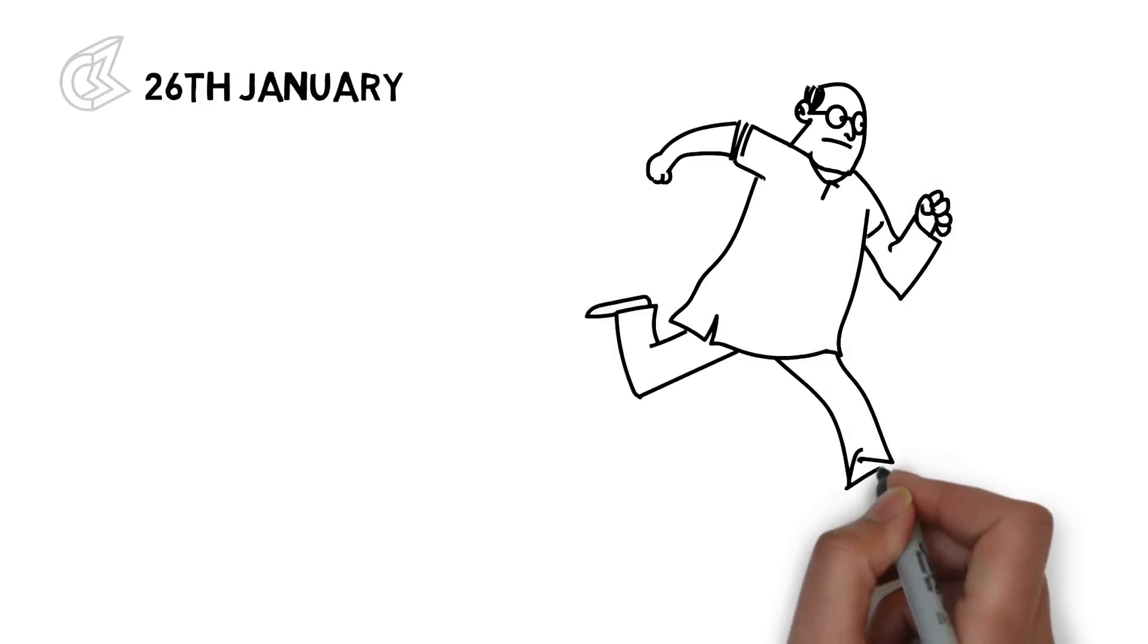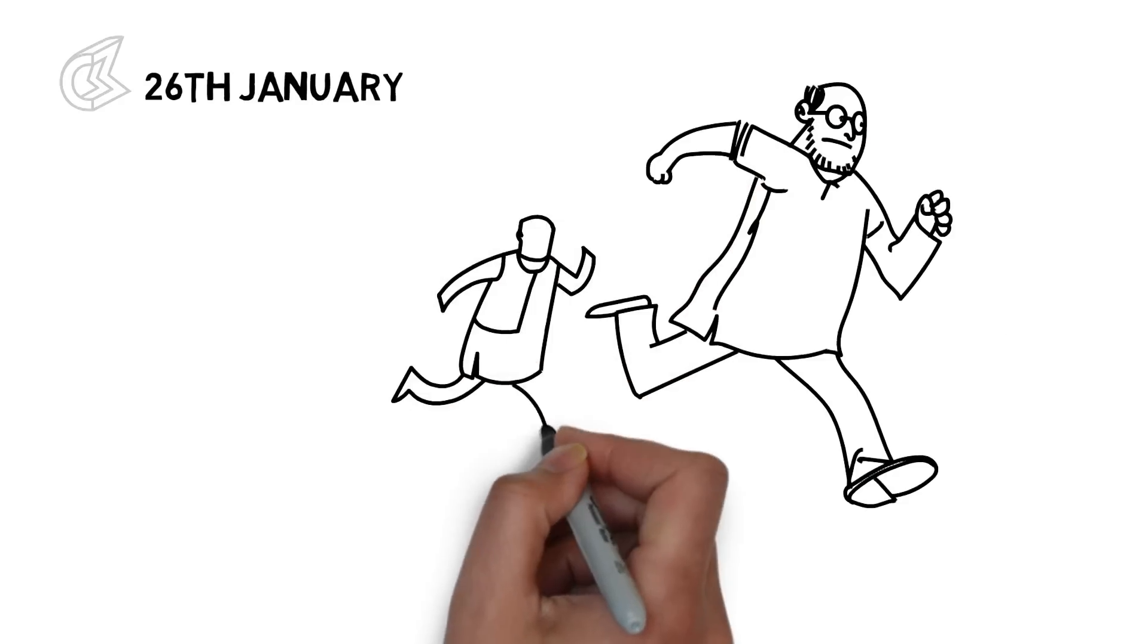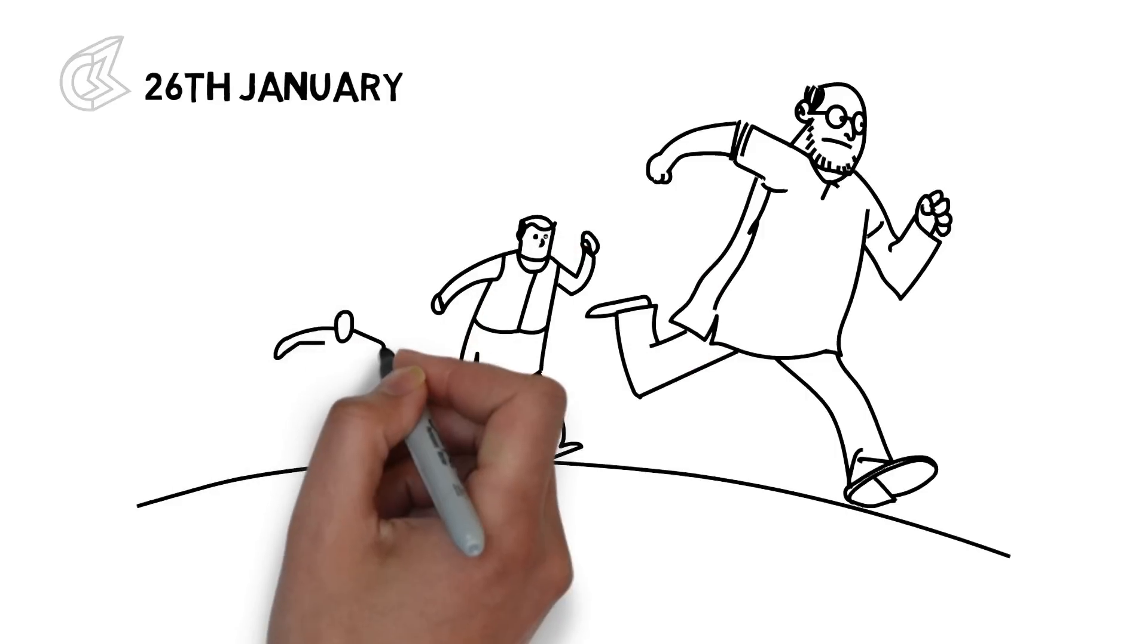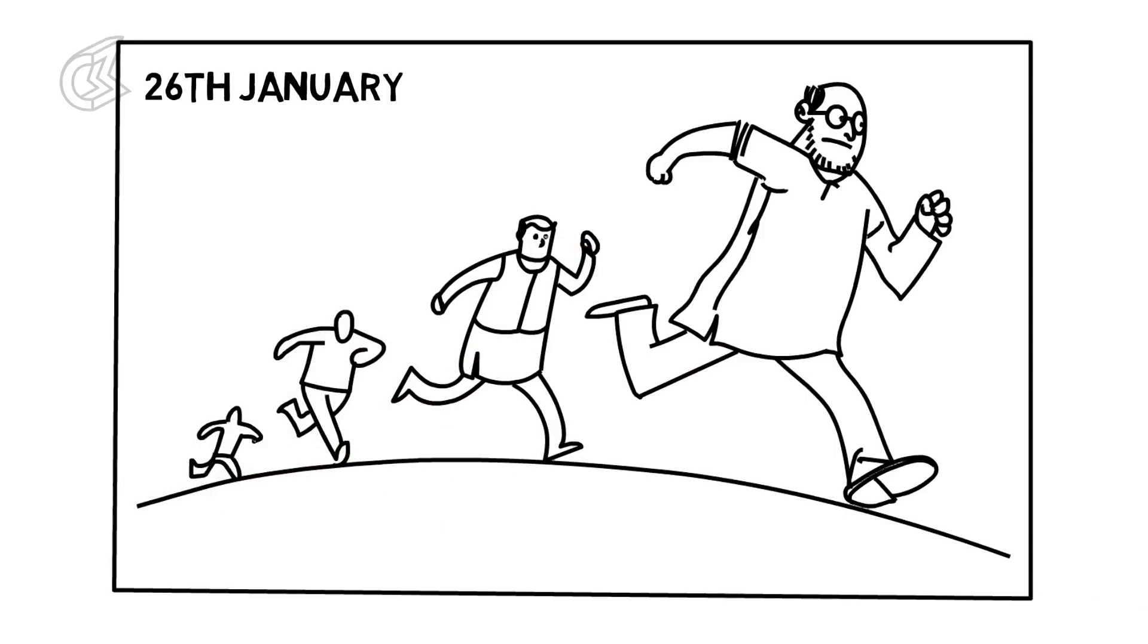Netaji, disguised as a local by his companions, leaves Peshawar along with Bhagat Ram Talwar, Mohammad Shah and a guide. They maneuver their way towards Kabul through the rough terrain south of the Khyber Pass.